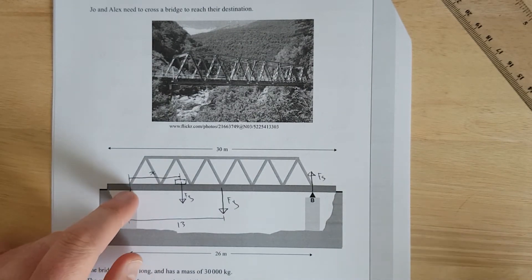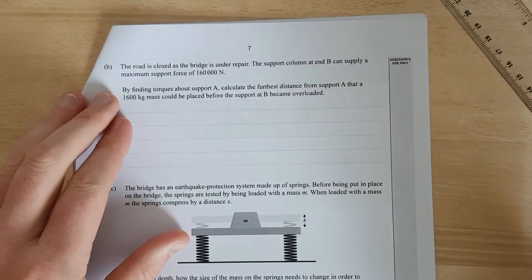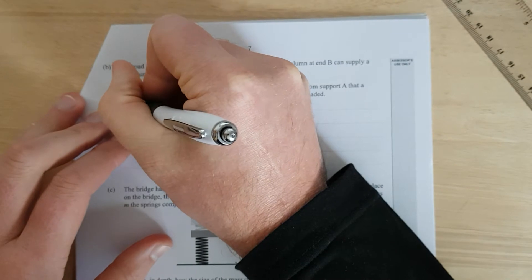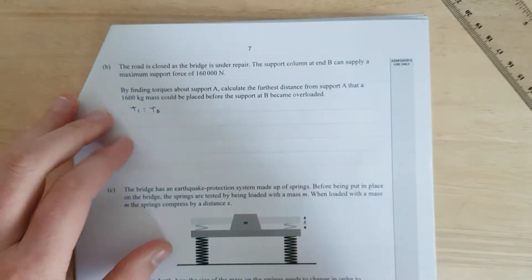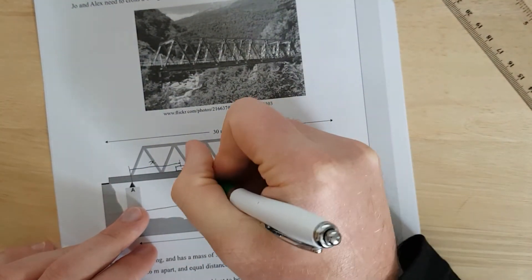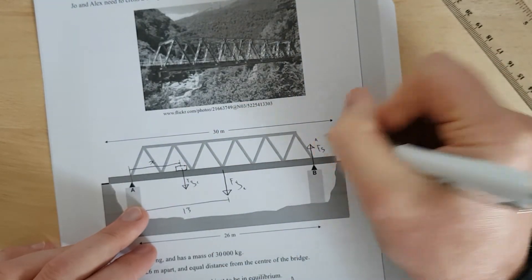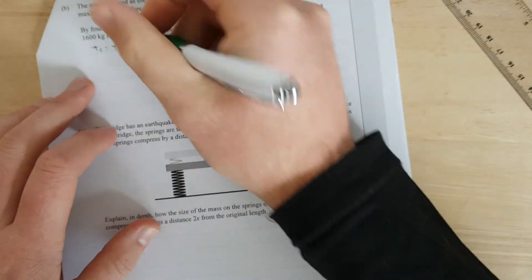So we're going to draw up our equation of balanced torques. Clockwise torques is going to be equal to the anticlockwise torques. And then we're going to figure out which one's clockwise. This FG is clockwise, this one's clockwise, and this one is anticlockwise. So these two are going to add together.